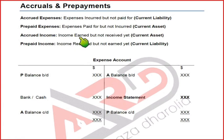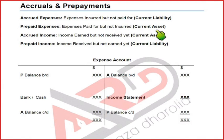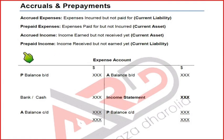Income is accrued when it is earned but not yet received. This means we have provided services to customers but they have not yet paid. For example, if a student studies for a whole month but hasn't paid school fees, for the school that is accrued income — earned but not received — making it an asset, a receivable for the school.